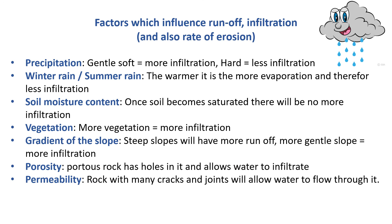Factors which influence runoff, infiltration, and also the rate of erosion. We need to know that where there is more runoff, there is going to be more erosion. Erosion is never good — it removes the valuable topsoil. Precipitation: this is the type of rain you're having. Heavy storms means the water would run off quicker, whereas gentle rain would give you more infiltration.